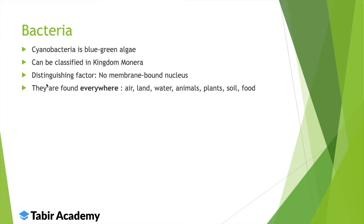The distinguishing factor is that they don't have any membrane-bound nucleus. That means the DNA is floating in a cell — it doesn't have any membrane. Prokaryotes can be found everywhere: air, land, water, organisms, animals, plants, soil and food.